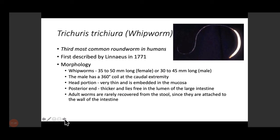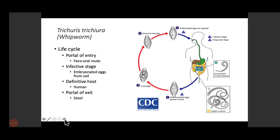Adult worms are rarely recovered from stool; it is generally the eggs detected in stool that help make the diagnosis, since the worms are tightly embedded in the intestinal mucosa. When reading any parasite's life cycle, remember four important things: portal of entry, infective stage, definitive host, and portal of exit. For Trichuris trichiura, unembryonated eggs are passed in feces, mature in soil through a two-cell and then multi-nucleated stage, eventually becoming embryonated eggs containing larvae.